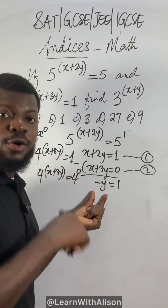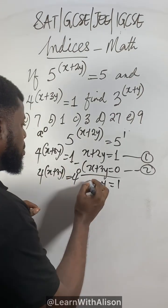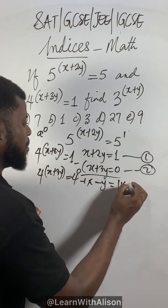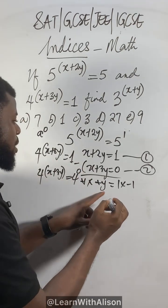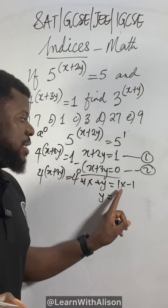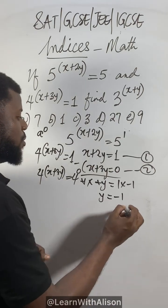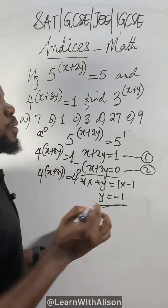So 2y minus 3y will give us minus y equal to 1 minus 0 gives us 1, and we don't need to have a negative sign on the variable side. So what do you need to do? Multiply by negative 1. Negative negative will be positive, leaving us with 1 times y which is y equal to 1 times negative 1 equals negative 1. This is the value of y.